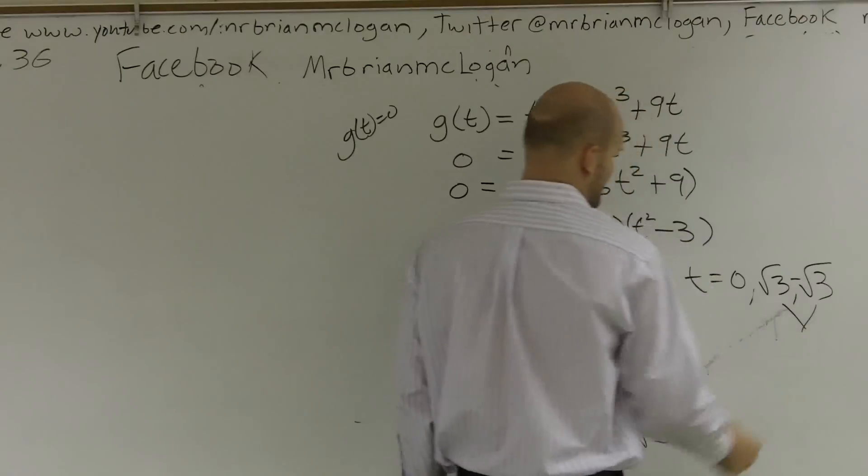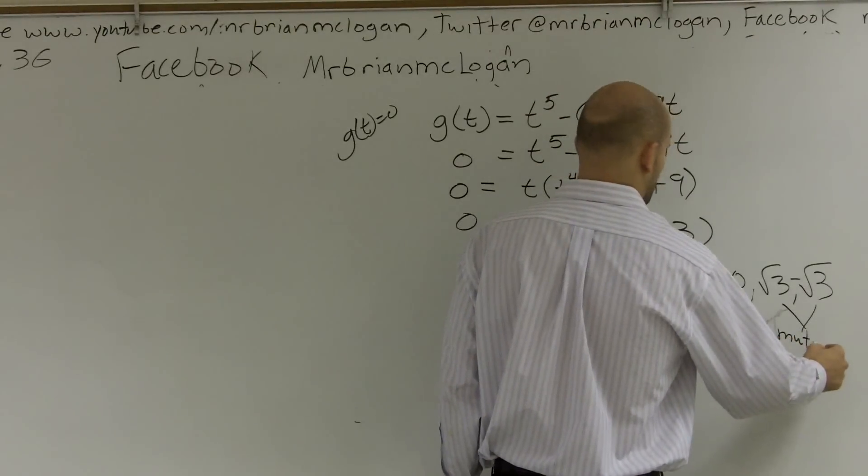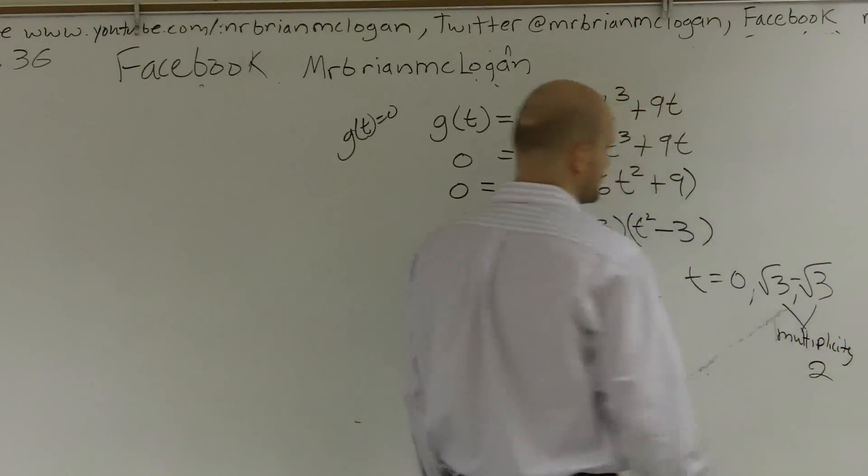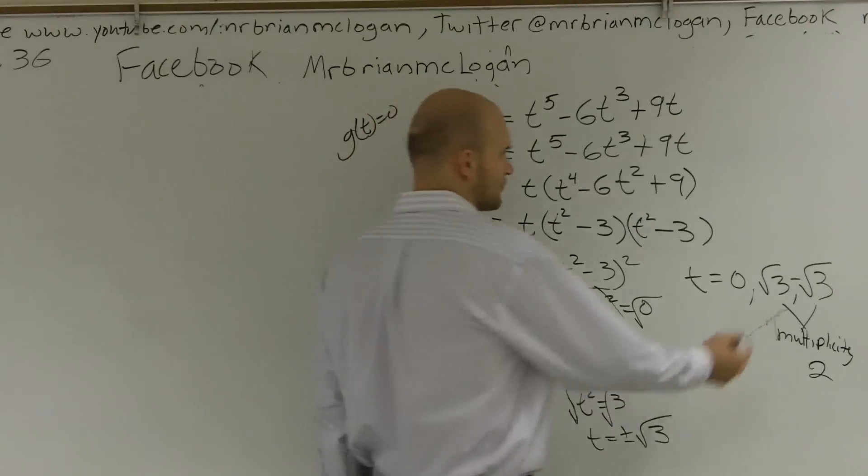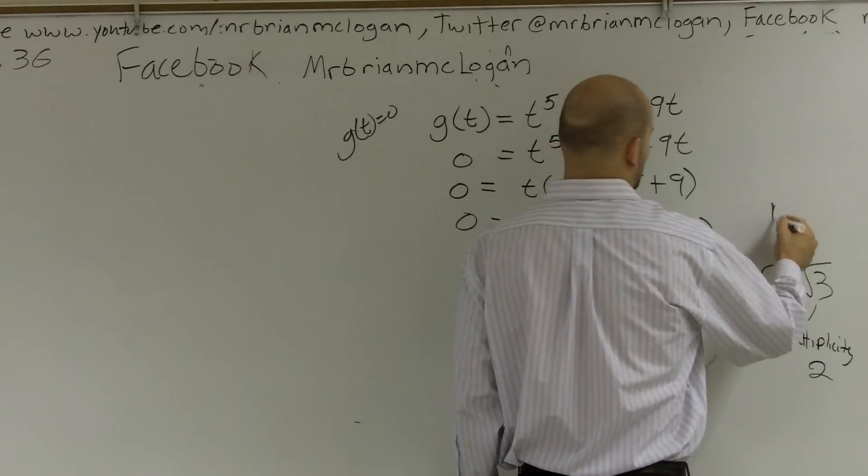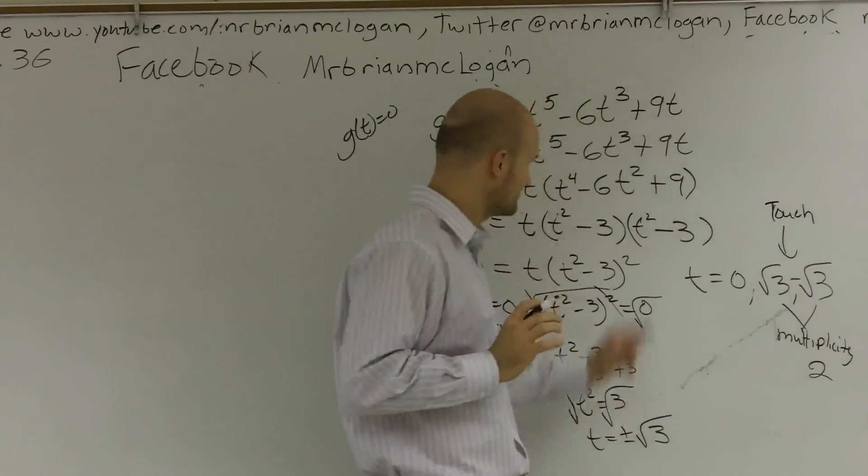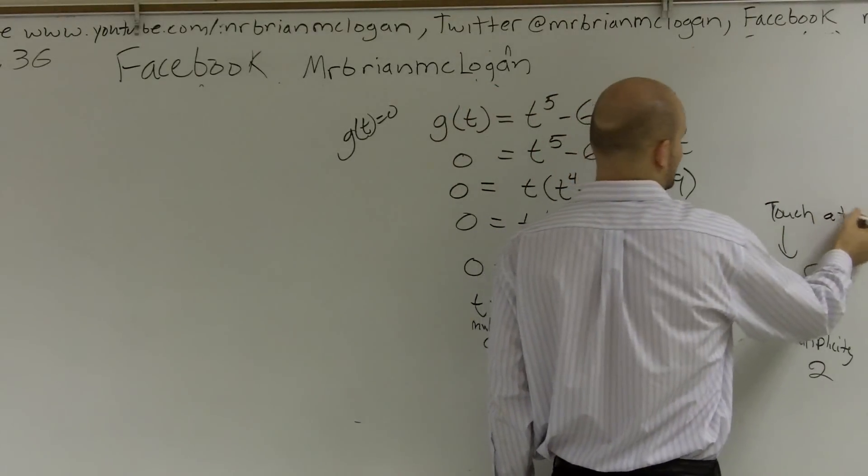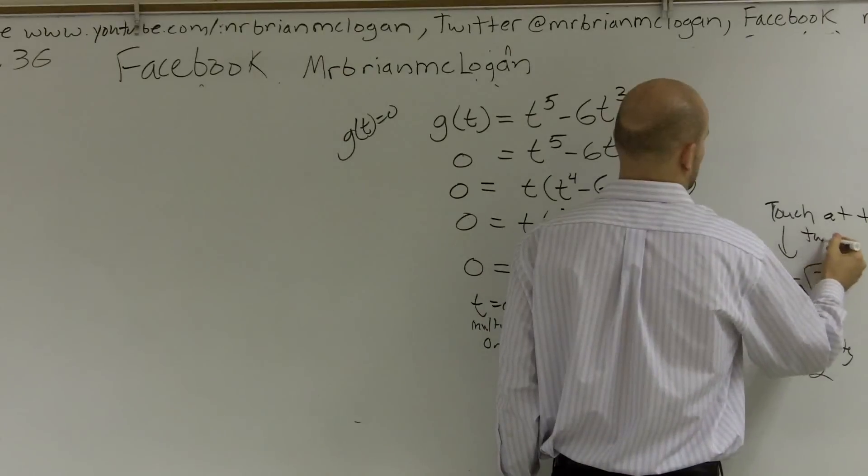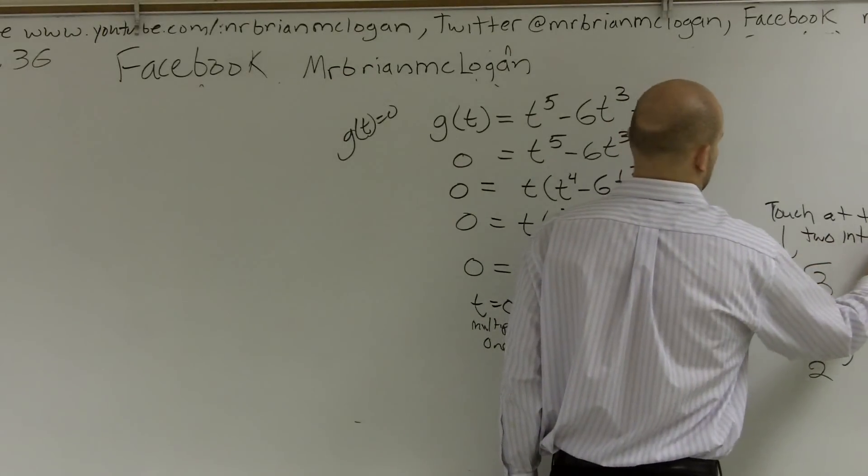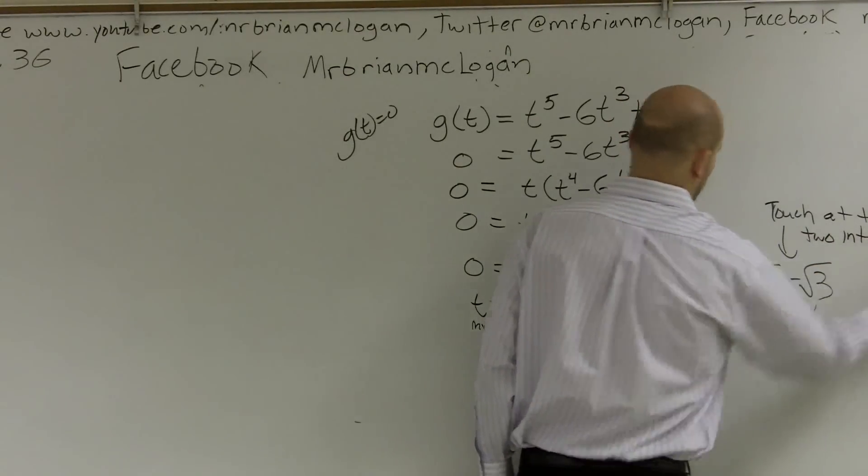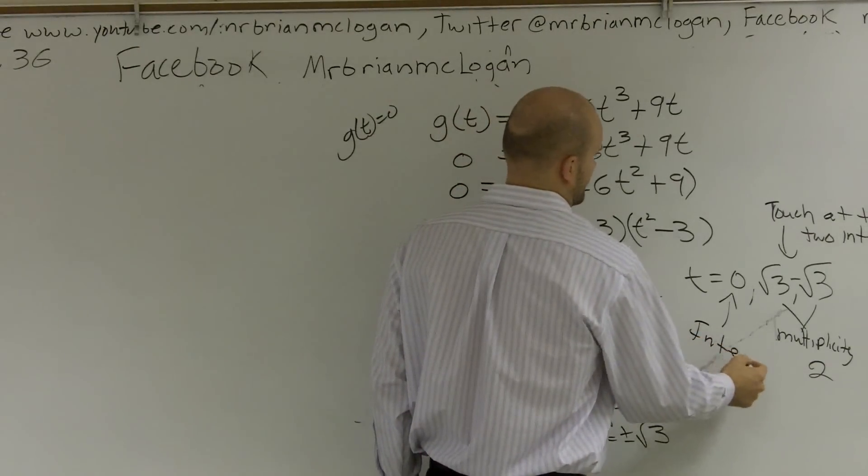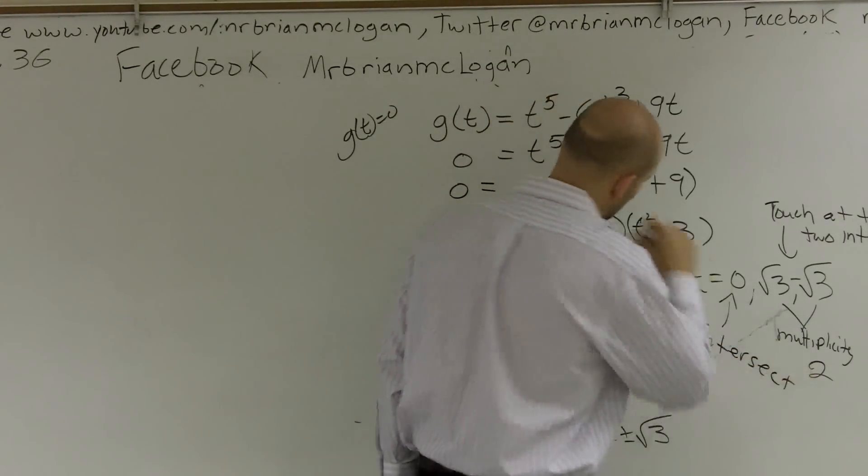Both of these are to a multiplicity of two. So what it means is the graph is going to touch. Just touch. Just a nice little touch. It's going to touch at these two intercepts. And here,